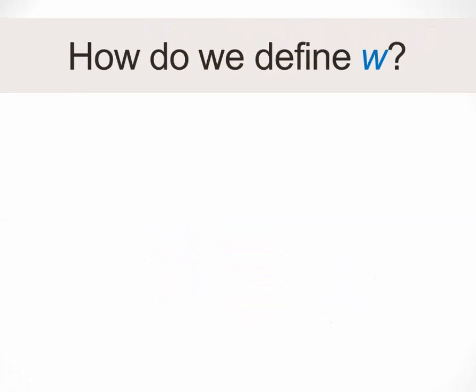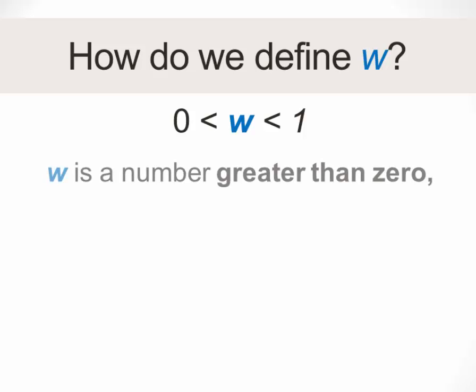How, then, do we define W as a quantity? We can use this set of inequalities. W is any number that is greater than zero but less than one. So we can push W as close to zero as we want to, but we can't make it zero. And on the other hand, we can push W as close to one as we want to, but we can't make it one.